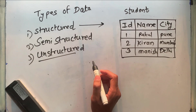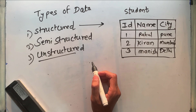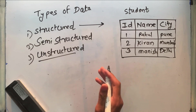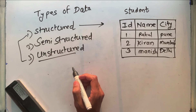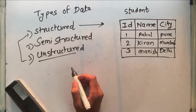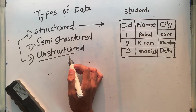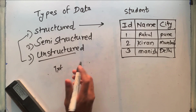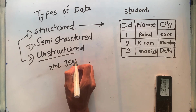The second type is semi-structured data. Semi-structured data lies in between structured data and unstructured data. Examples of semi-structured data include XML, CSV, and JSON. It is less complex than unstructured data. We can take the example of an XML file, a JSON file, or a CSV file.